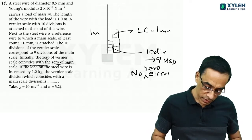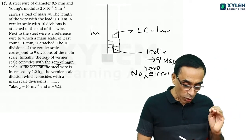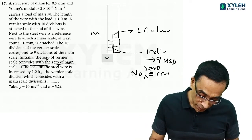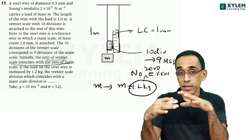Initially, zero of vernier scale coincides with the zero of main scale. That is, no zero error.